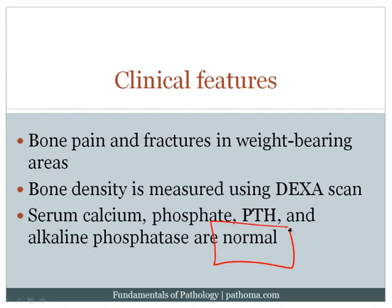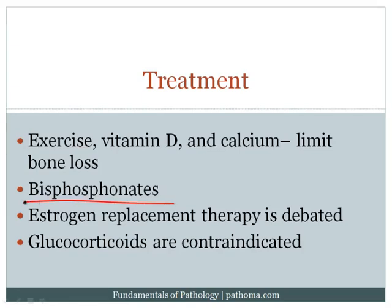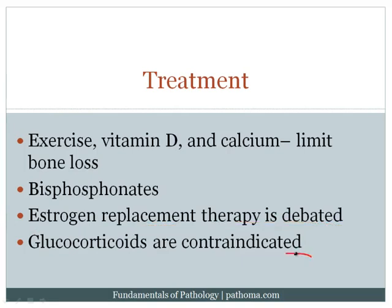Treatment includes exercise, vitamin D, and calcium to limit bone loss to approximately 1% per year. Bisphosphonates can be used — they attach to bone, osteoclasts ingest them, which induces osteoclast apoptosis, thereby decreasing the rate of bone loss. Estrogen replacement therapy is debated but theoretically helpful since estrogen protects against bone loss. Glucocorticoids are contraindicated because they increase the risk of osteoporosis.